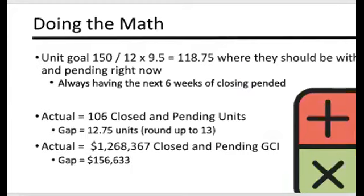So you're gonna take your unit goal — in my example, 150 — divide it by 12, then multiply that by 9.5. In my example, that takes me to 118.75, which is where the team in this example should be between closed and pending as of August 28th.